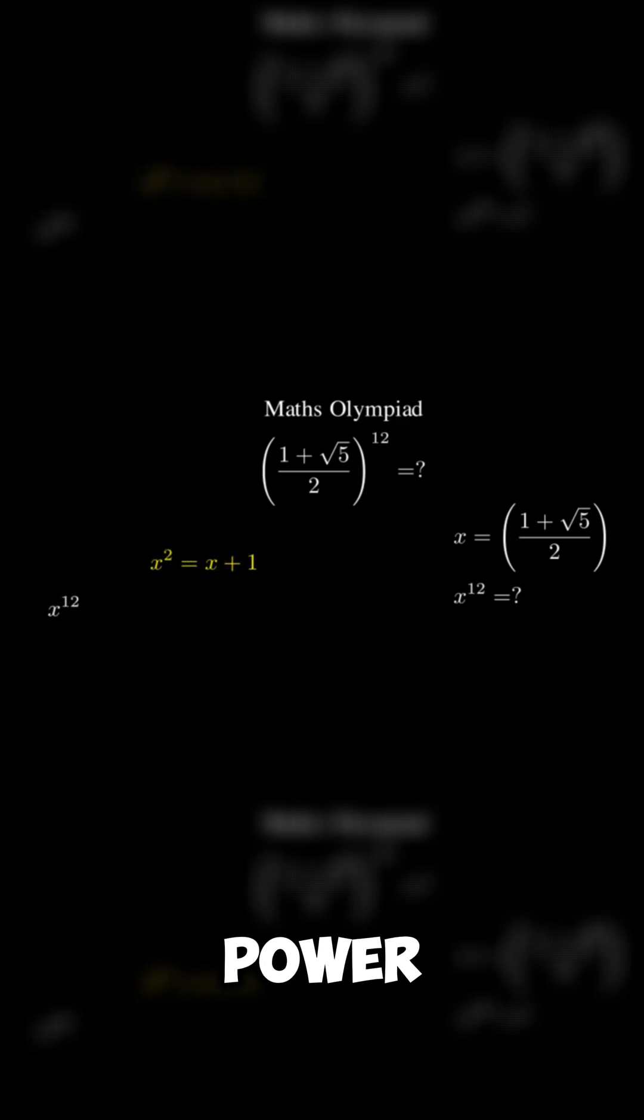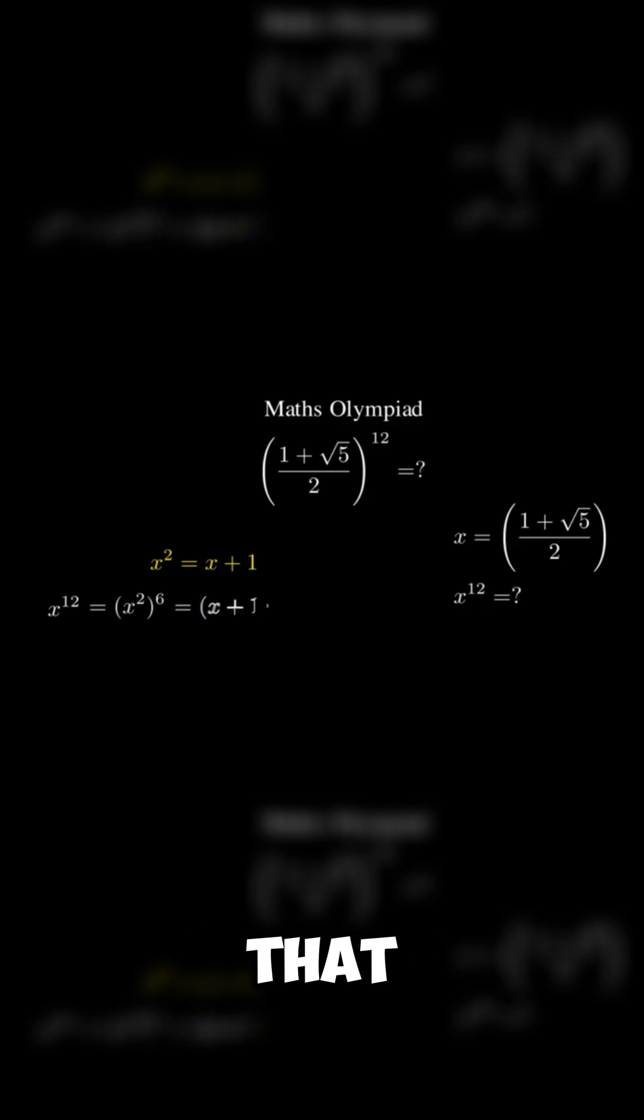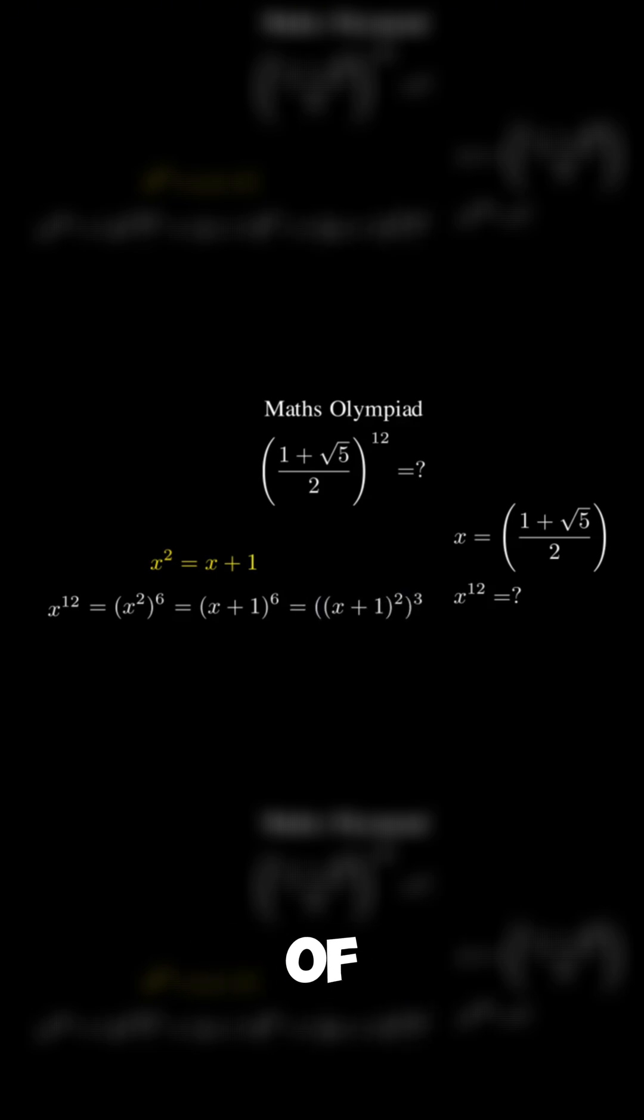Now let's calculate x power of 12, which can be written as x square power of 6. After that we can replace x power of 2, and this could be written as x plus 1 power of 2 power of 3.